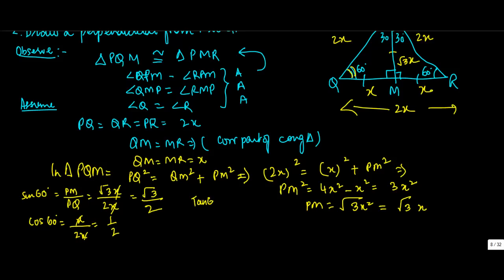tan 60 is sin 60 upon cos 60, root 3 upon 2 divided by 1 upon 2. But instead of dividing, I can multiply. So 1 by 2, I can write as 2 upon 1. So tan 60 is equal to under root 3.